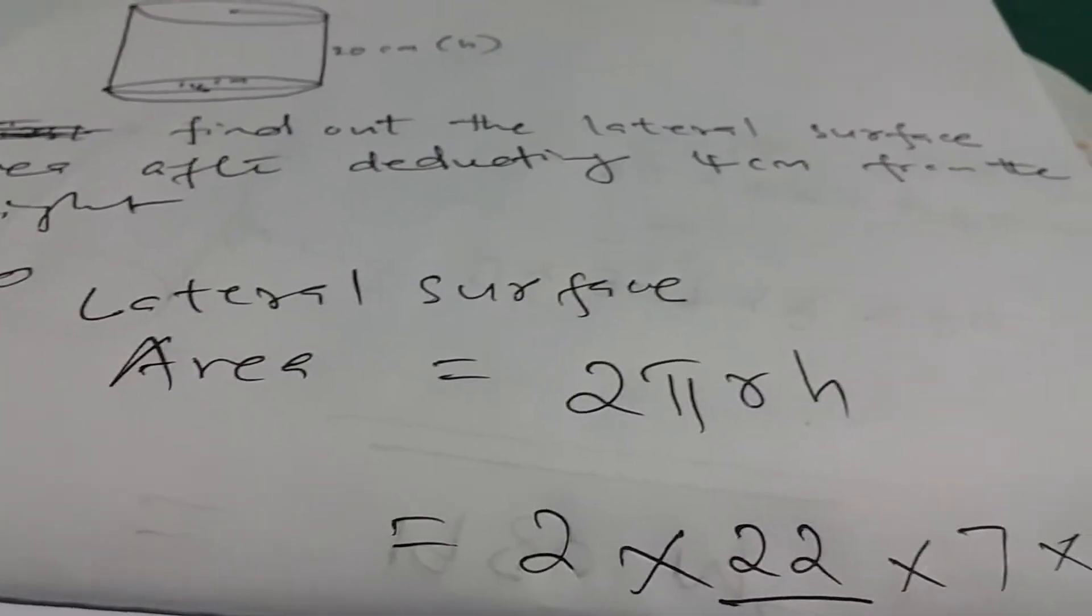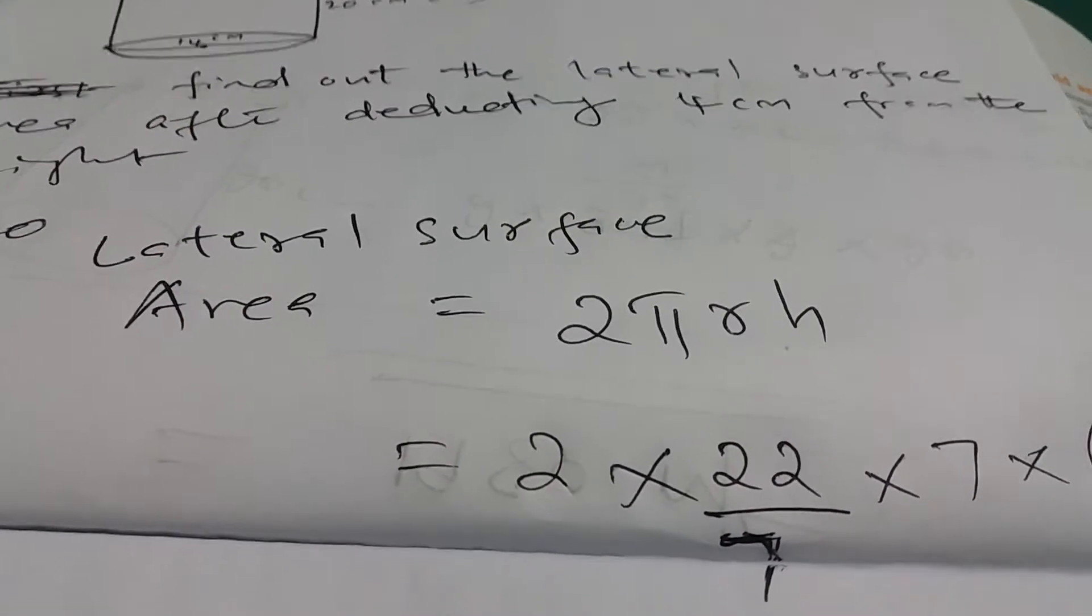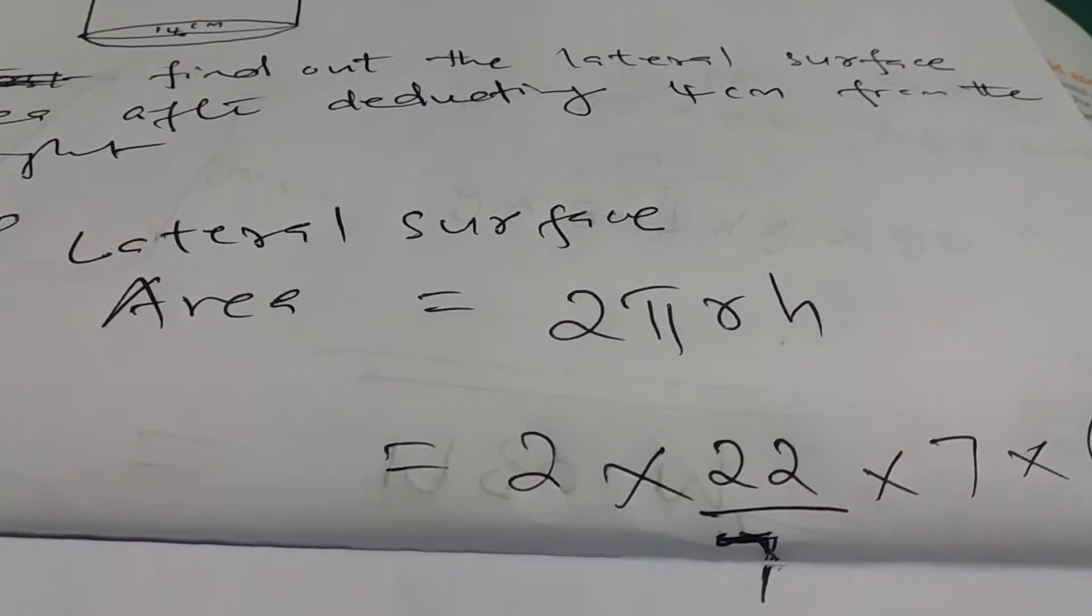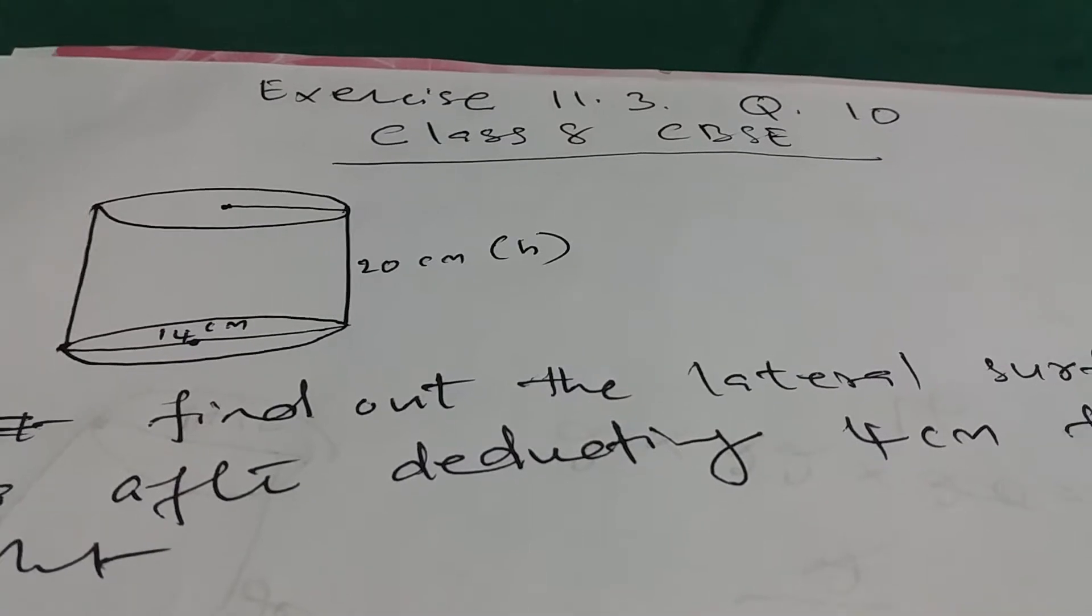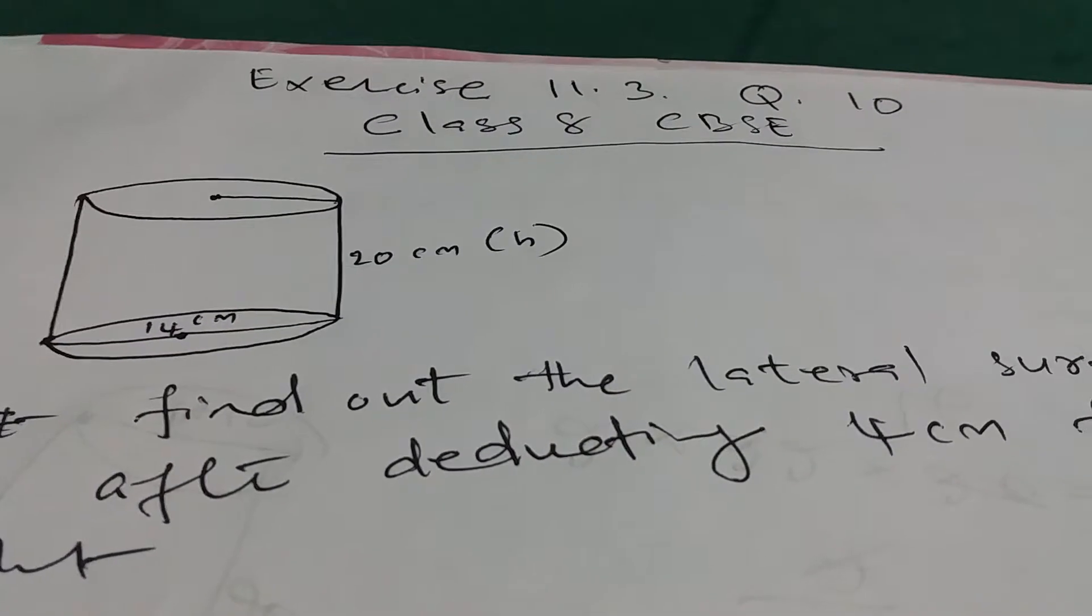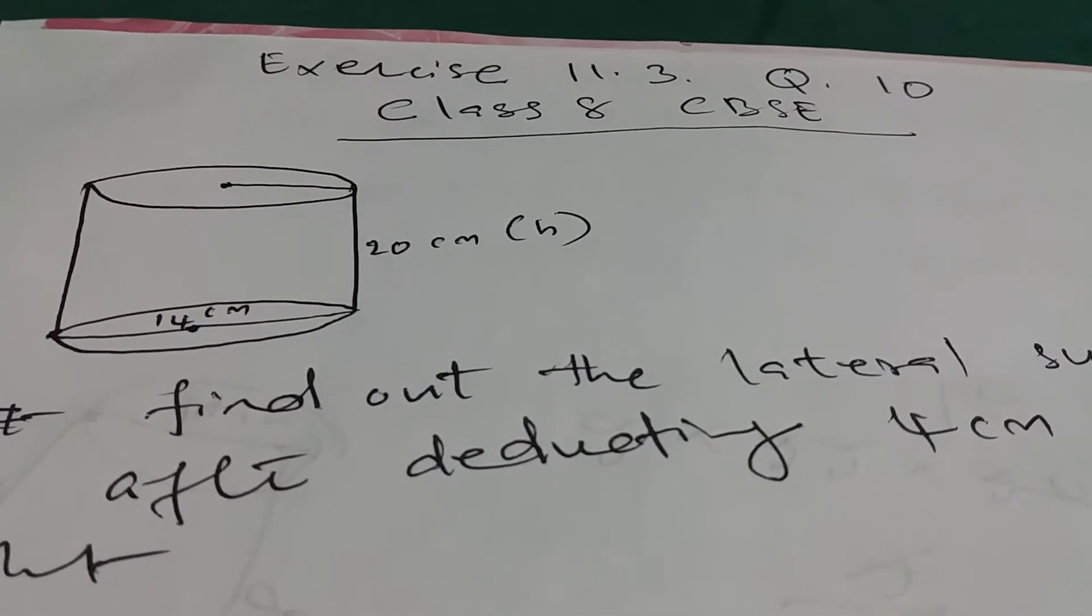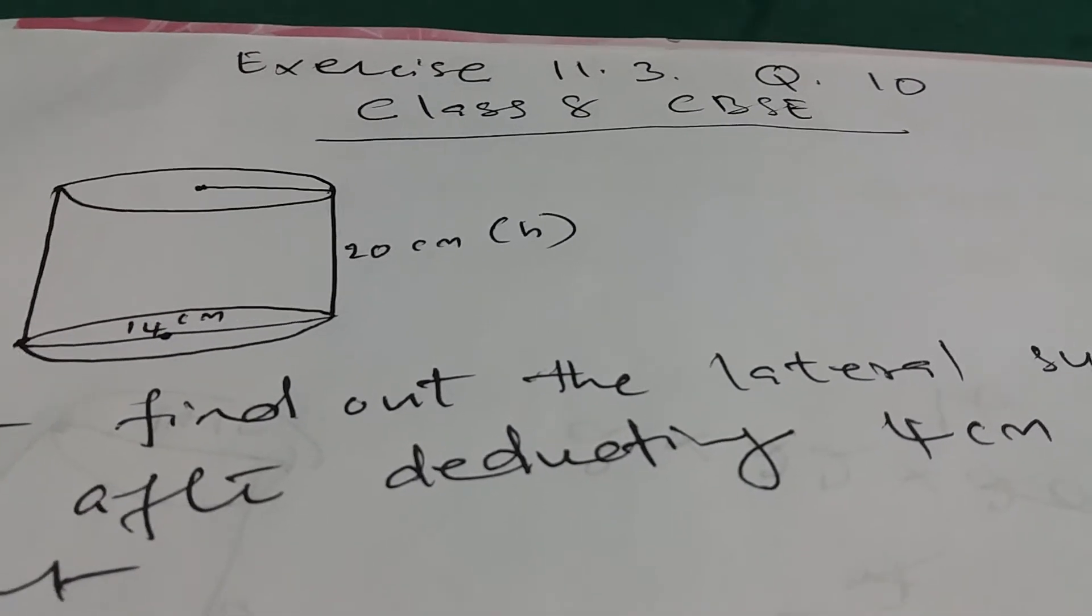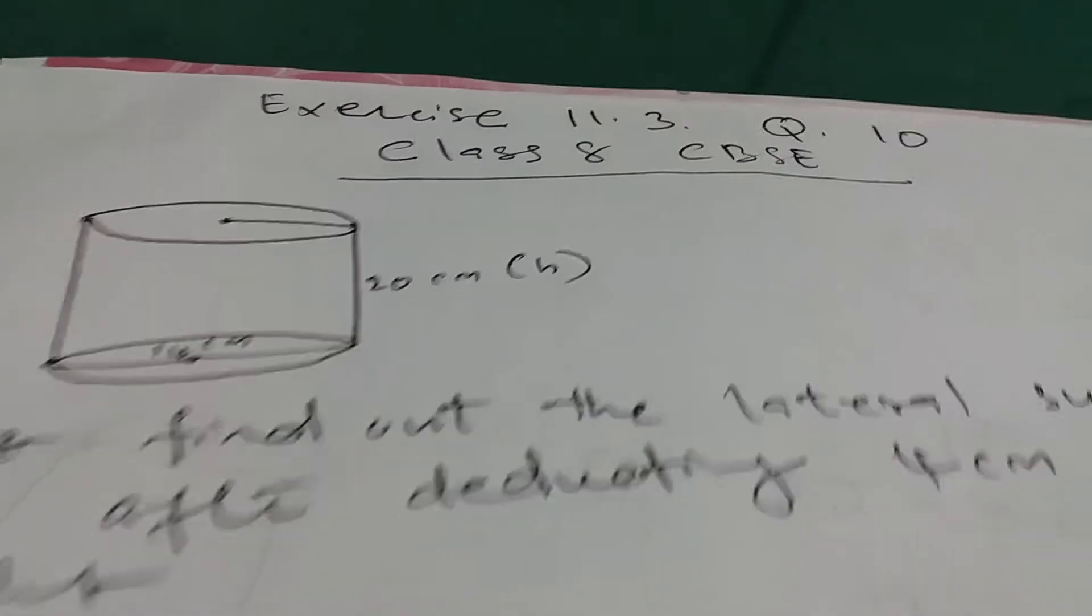Now what we need to find out: the formula here is 2πrh, that is lateral surface area. So from the height which is 20 centimeters given, we need to deduct 4 centimeters from the bottom and from the top. Then we will get 16 centimeters.